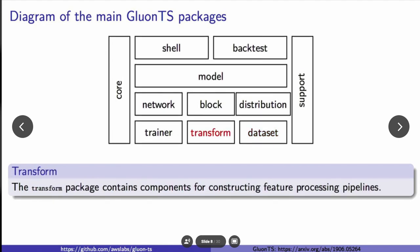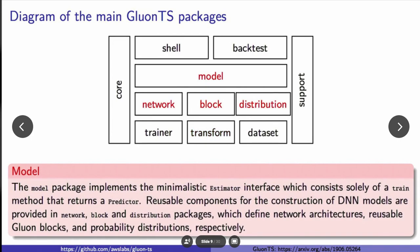The transform package is used to do your feature processing pipeline. We'll see examples of this later. One of the most important packages would be the model package. Here you'll implement an estimator interface, which will inherit from our base estimator class. You'll define a train method that will return a predictor. The predictor will then be used to evaluate your metrics and also plot your forecasts. Within this model, we have reusable components for construction of other neural network-based models. Those are provided in the network block and distribution packages.